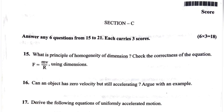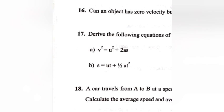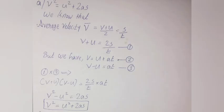Question 17: Derive the following equations of uniformly accelerated motion. A) V square is equal to u square plus 2as. B) S is equal to ut plus half at square.